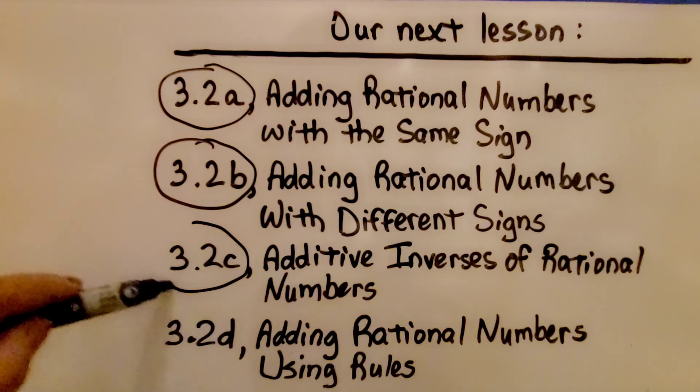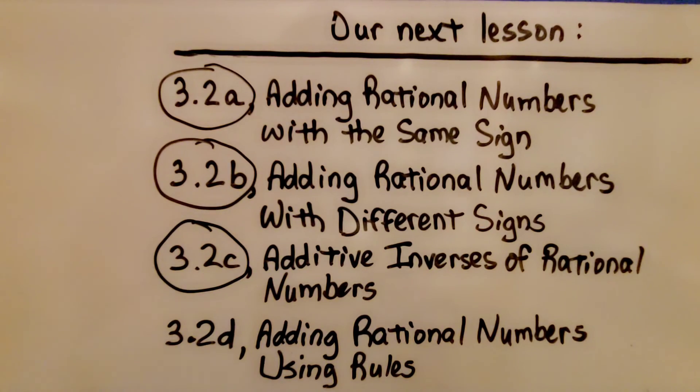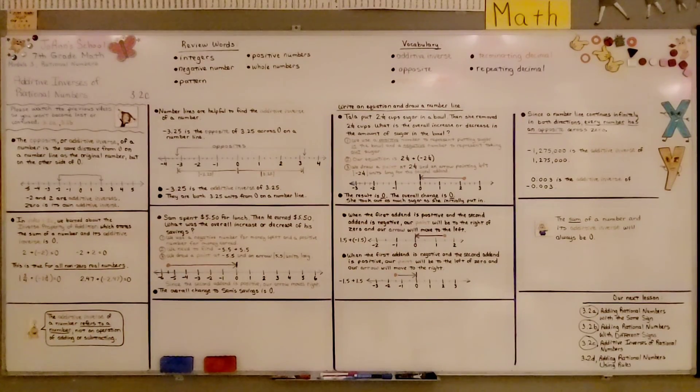We finished the third part of the lesson. We're going to move on to the last part, 3.2d, adding rational numbers using rules. Remember, the first two parts of this lesson are linked in the description if you missed them. Have a great day and please join me for the last part of the lesson.